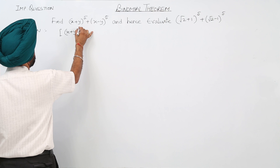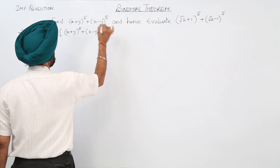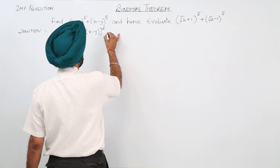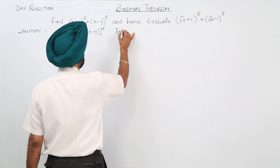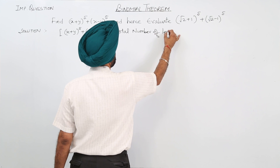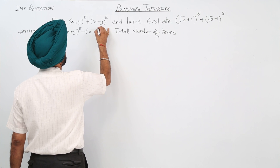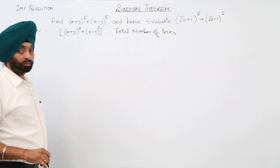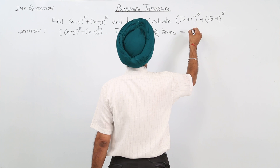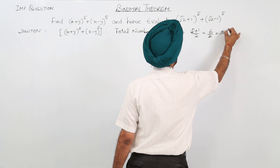Now for (x + y)⁵ + (x - y)⁵, the first thing we need to determine is the total number of terms. Since the exponent is odd — 5 — the total number of terms will be (5 + 1) / 2 = 6 / 2 = 3 terms.